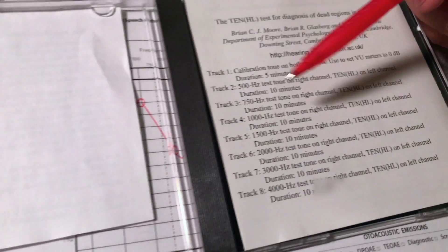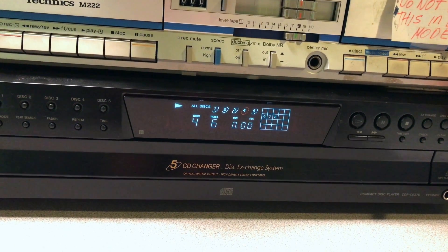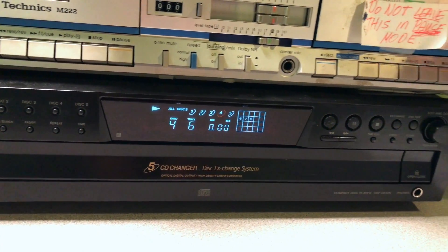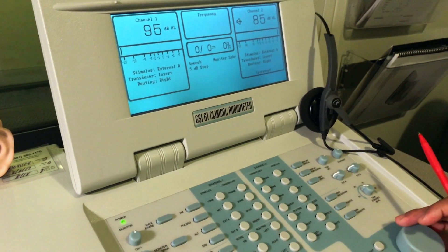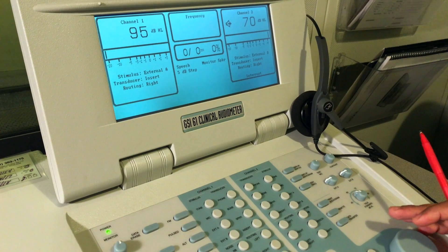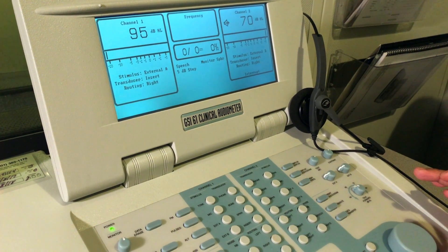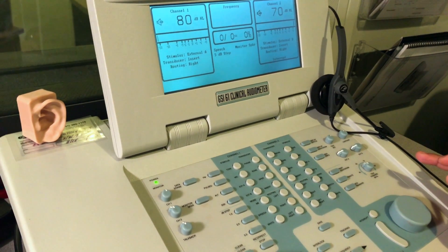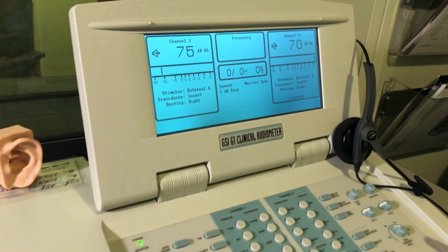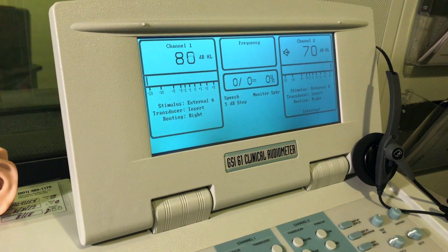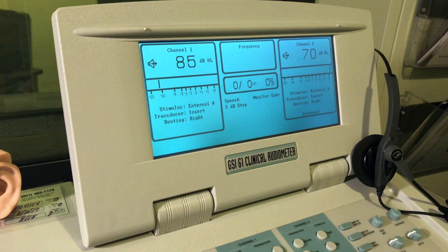You do the same, but what you need to do is just change the track to track 4. We were at track 6, go back to track 4, which is for 1000 Hertz, and set the noise level here on channel 2 to 70 dB. Make sure it's playing continuously and use external A to measure the person's threshold again.